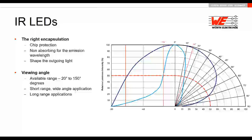Another important parameter about the encapsulation is that it should not absorb light. That's why we use special silicones that are transparent in the infrared range, so we have almost 100 percent of the light emitted from the chip exiting out to be used.